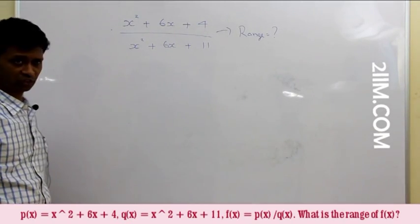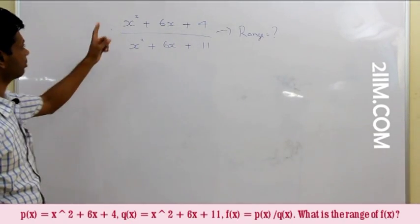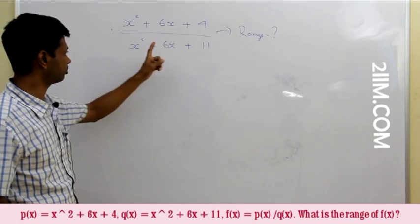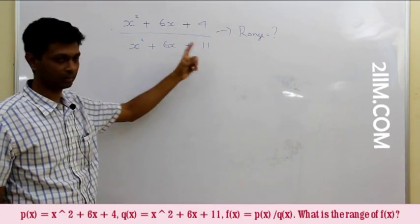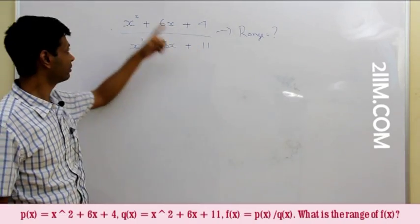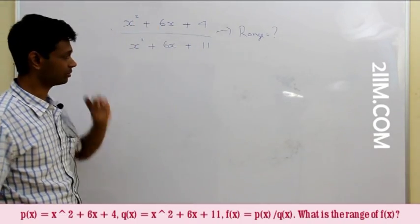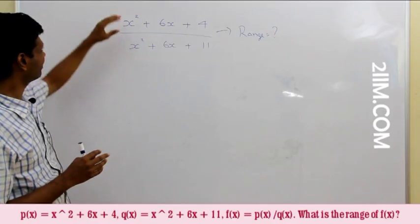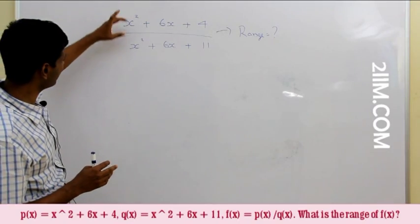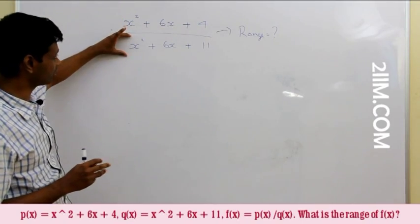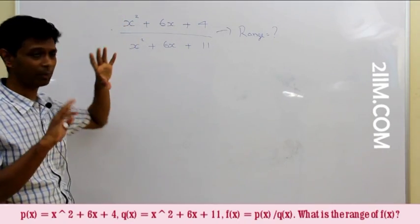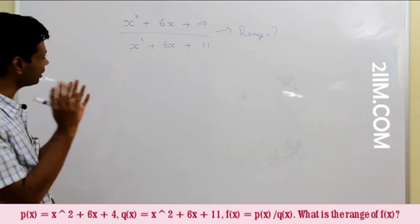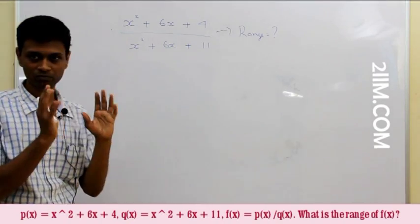We need to find the range of the function (x² + 6x + 4) / (x² + 6x + 11). We have two quadratics here, and it is going to be incredibly tough. I can find the range of each individually, but I cannot combine them directly. So my first idea is to simplify this expression.